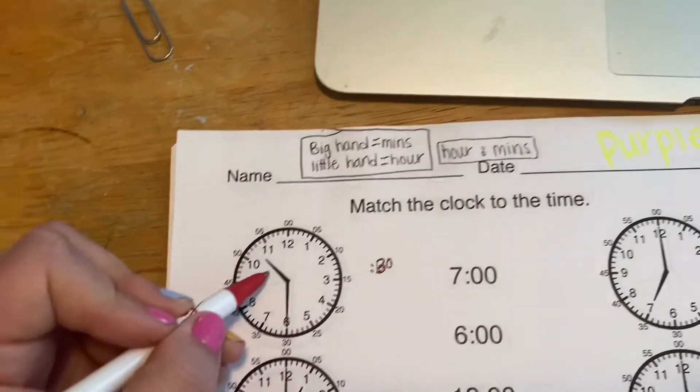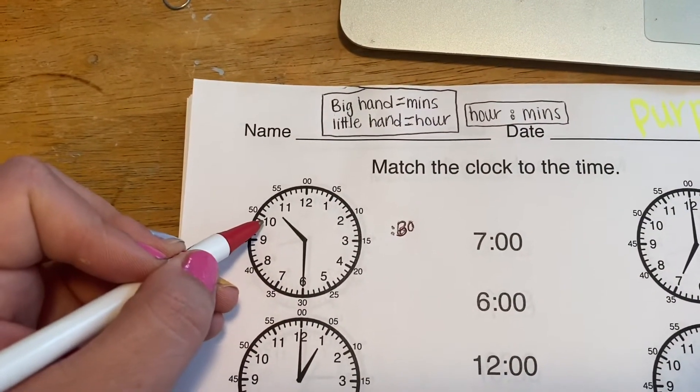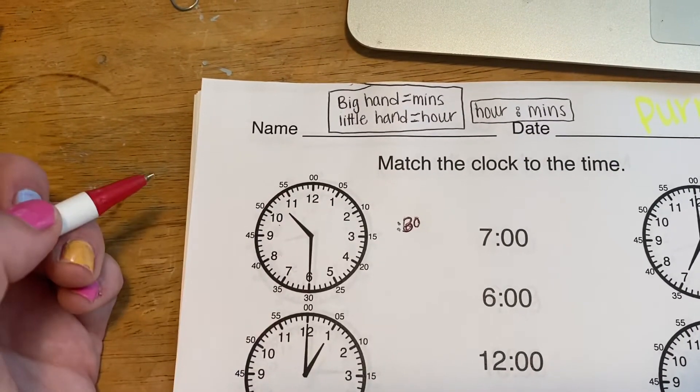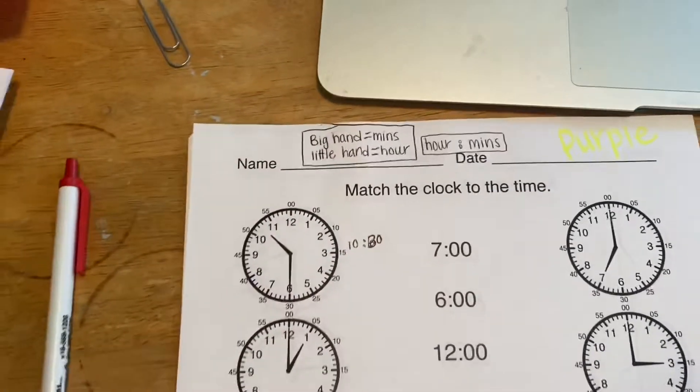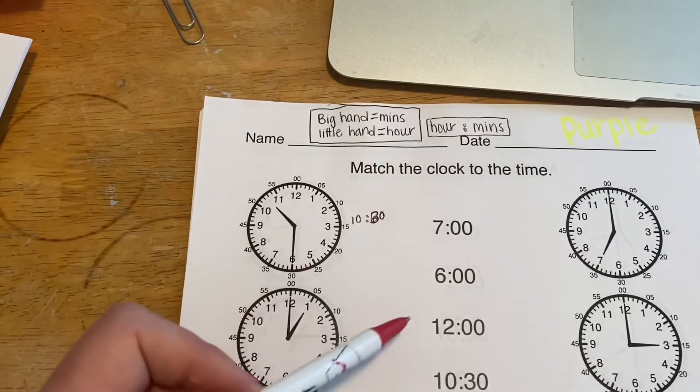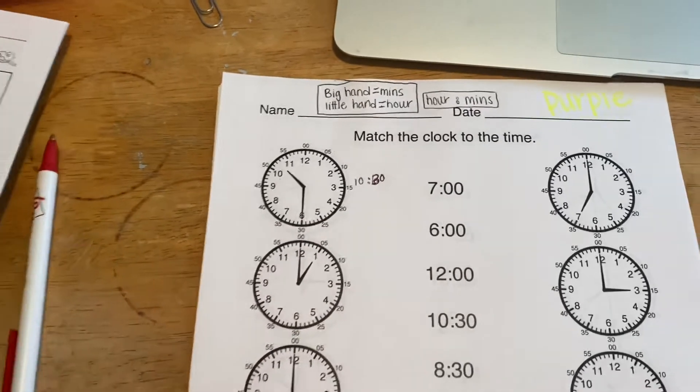And my hour hand is pointing to in between the 10 and the 11, so it is 10:30. And you'll look on here and you'll look for 10:30 right there and you'll draw the line.